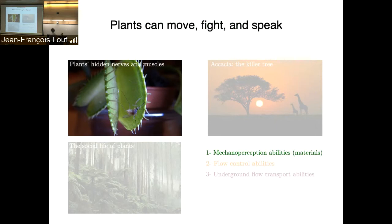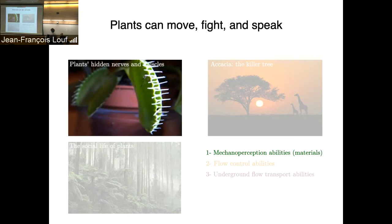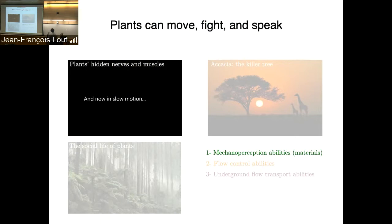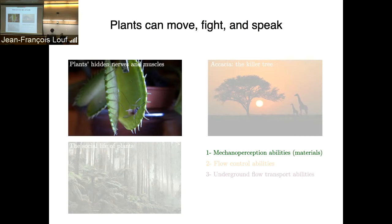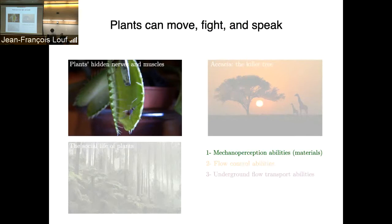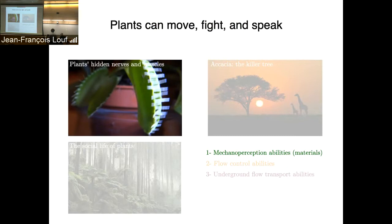A question from the audience: do animals also use pressure to convey information? I think because animals have a nervous system, the brain reads ions and nerves transmit ions, so they don't need pressure for signaling. At the cellular level, cancerous cells do use pressure to move. But for completed organisms like us, a nervous system works better. Plants use pressure instead because they lack a nervous system.